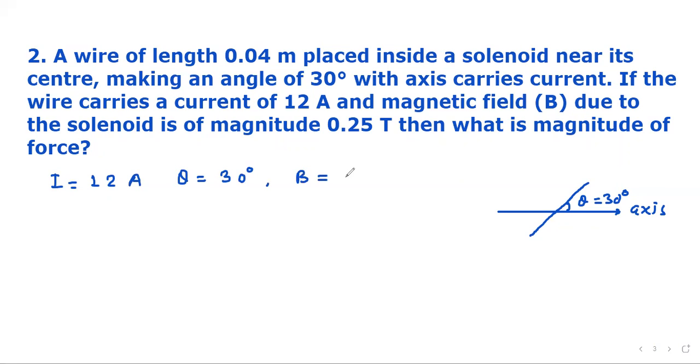Magnetic field is given as 0.25 tesla and we have to find out what is the force. It is a simple question. F equals B I L sin theta. We can put that as 0.25 times 12 times 0.04 times sin 30, and sin 30 is 1 by 2.